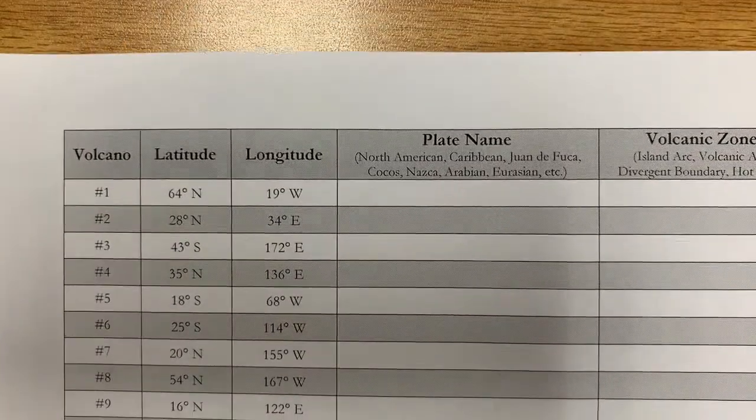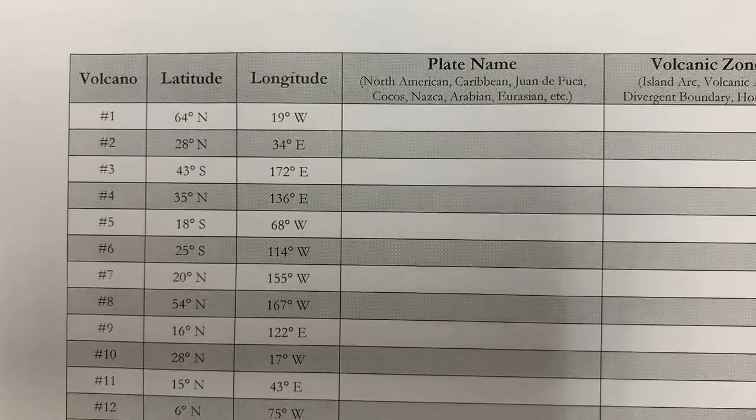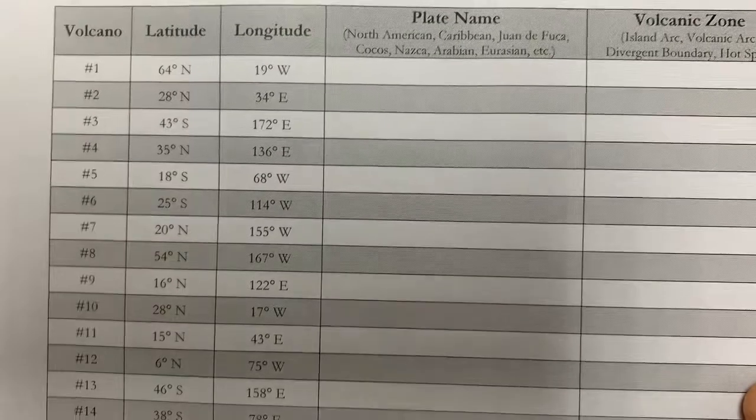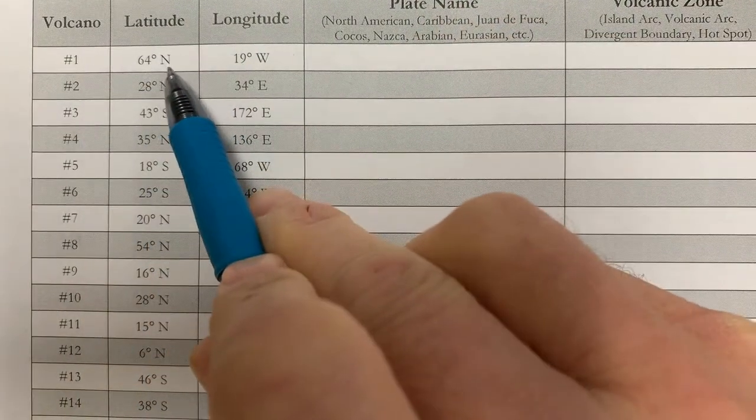So on this lab you have a series of volcanoes with latitude and longitude, and I just want to remind you if you need a little help on how to plot these. Starting with the first one here: 64 degrees north latitude and 19 degrees west longitude.